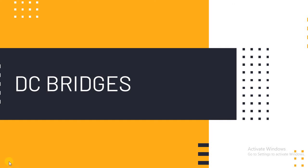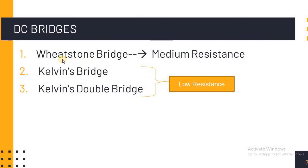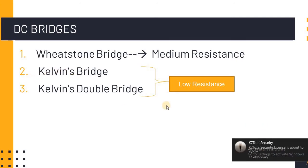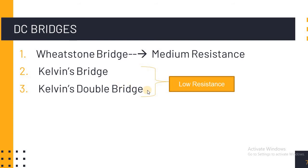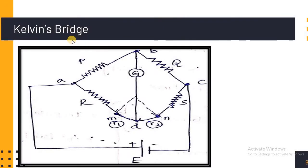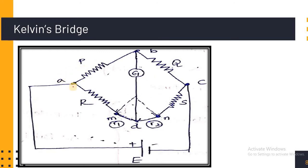Hello guys, welcome to my YouTube channel. Today our topic is lazy bridges — we had already completed the Wheatstone bridge, now we are moving with Kelvin's bridge. Wheatstone bridge is used for the measurement of medium resistance, whereas Kelvin's bridge and Kelvin's double bridge are used for the measurement of low resistances. Here is the circuit diagram for Kelvin's bridge — it consists of four arms: AB, BC, CD, and DA.